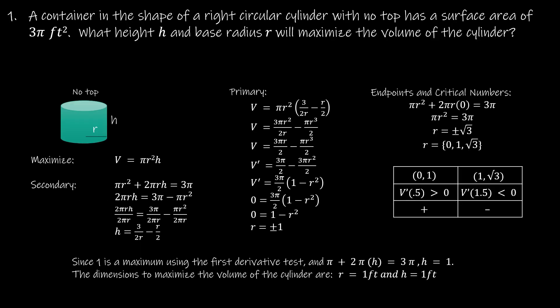So for our first question, we have a container in the shape of a right circular cylinder, which basically just means you've got a right angle where the base is meeting the height and there's no top. It has a surface area of 3π square feet. What is the height h and base radius r to maximize the volume of the cylinder?